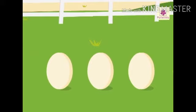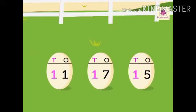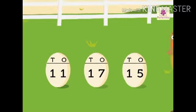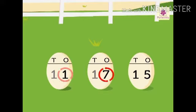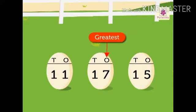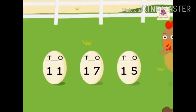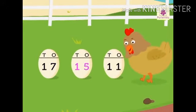When we arrange numbers from the greatest to the smallest, we say they are in descending order. Look at the eggs — each egg has a number written on it in the form of tens and ones. The numbers are 11, 17, and 15. Let's arrange 11, 17, 15 in descending order. Each number has one ten, so we compare the ones: one one in 11, seven ones in 17, and five ones in 15. The greatest is 17 and the smallest is 11. Hence the descending order is 17, 15, 11.